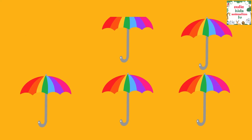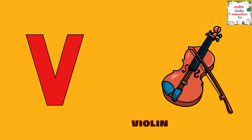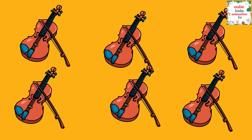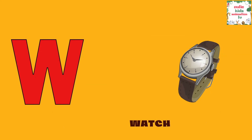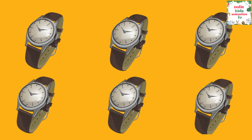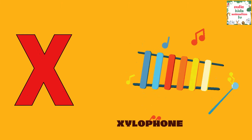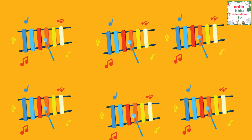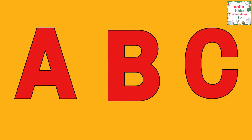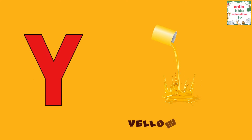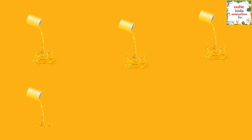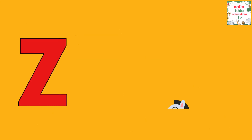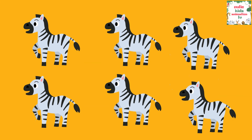U is for Umbrella, U-U-Umbrella. V is for Violin, V-V-Violin. W is for Watch, W-W-Watch. X is for Xylophone, X-X-Xylophone. Y is for Yellow, Y-Y-Yellow. Z is for Zebra, Z-Z-Zebra.